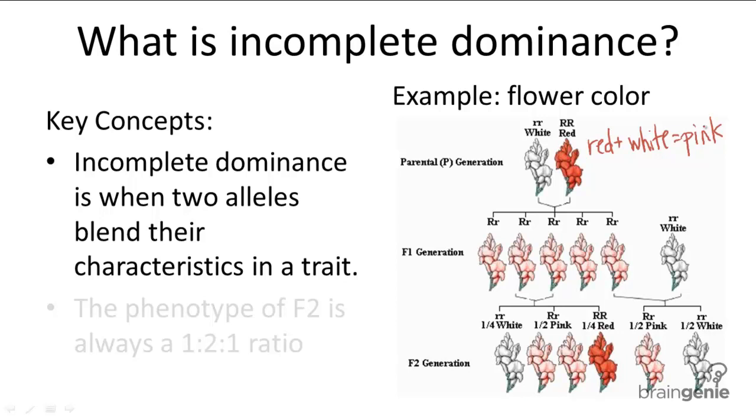This is evident if you breed the F1 generation amongst themselves. The red and white flowers then reappear in the F2 generation - white, pink, and red - always in a 1 to 2 to 1 ratio.